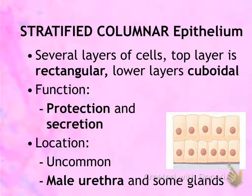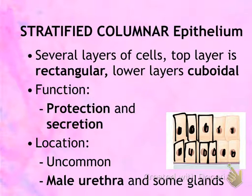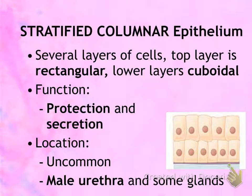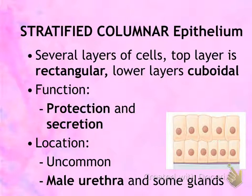Next is stratified columnar epithelium. The columnar cells are tall, and stratified tells you there are multiple layers. They have oval nuclei lined up toward the basement membrane in a row. Like other columnar epithelium, they contain goblet cells, which produce mucus. Function is for protection and secretion — secretion means releasing some type of fluid. This epithelium is uncommon in the human body, but you will find it in the male urethra and some glands.